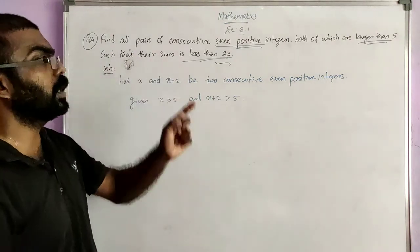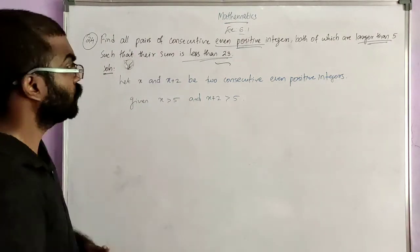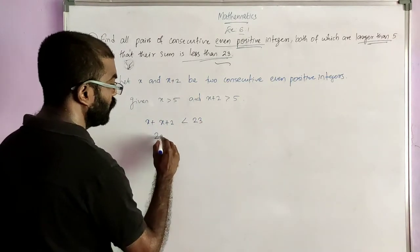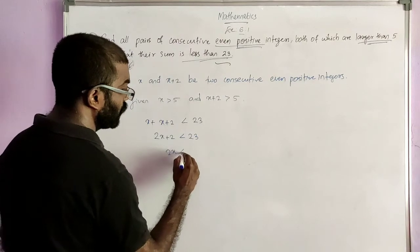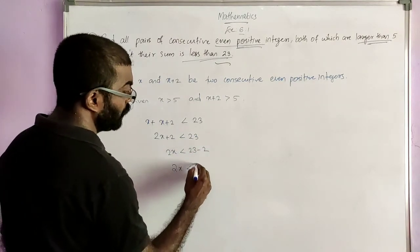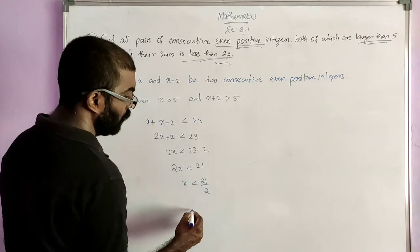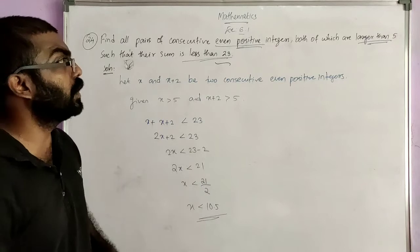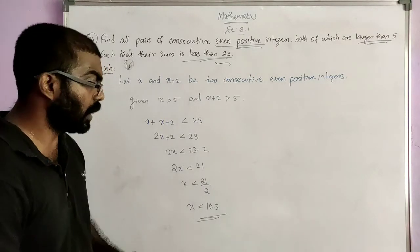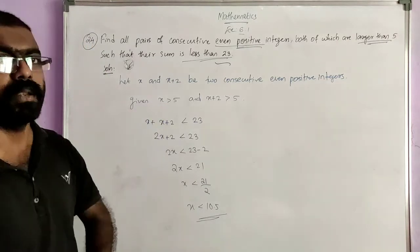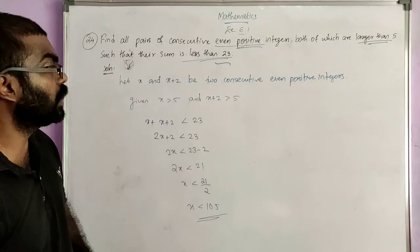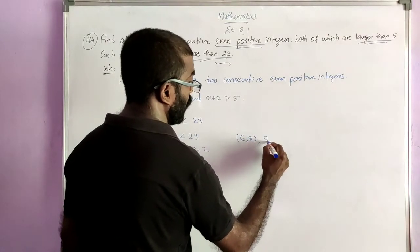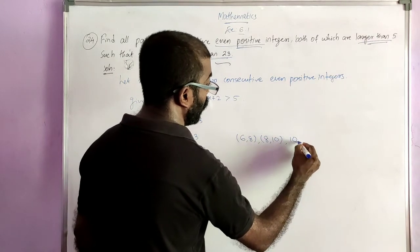The next condition is the sum is less than 23. So X plus X plus 2 is less than 23. X plus X is 2X, so 2X plus 2 is less than 23. 2X is less than 21. X is less than 21 by 2, and X is less than 10.5. We can write the pairs: X is less than 10.5 and X is more than 5. The next even positive integer after 5 is 6. So the pairs are 6, 8; then 8, 10; and 10, 12.